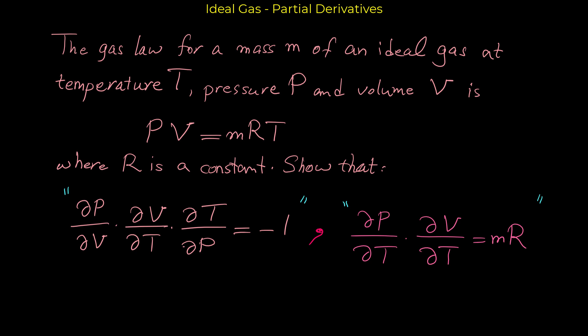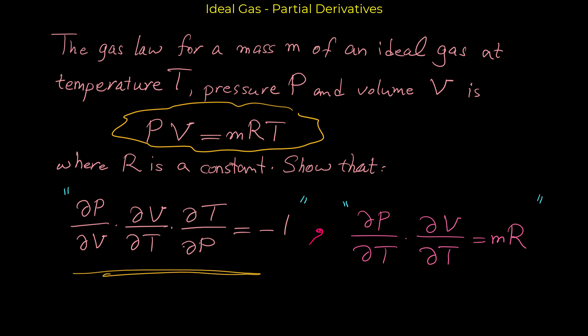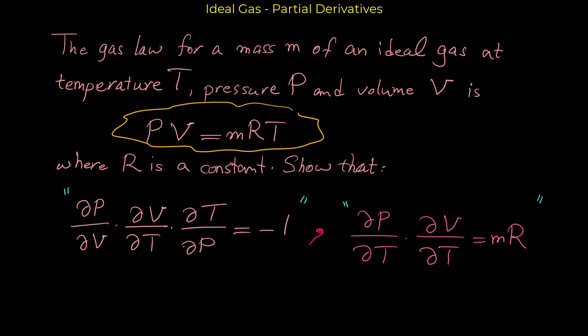In this video we want to show that for the ideal gas relation PV = mRT, we have these relations: the partial derivative of p with respect to v, times partial derivative of v with respect to t, times partial derivative of t with respect to p, equals negative one. We'll also prove another relation. Here, p is pressure, v is volume, m is mass, t is temperature, and R is a constant.